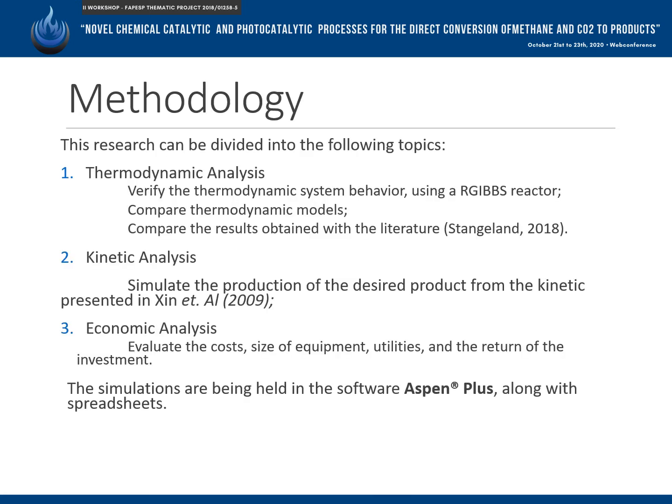This research can be divided into three topics. The first is the thermodynamic analysis, where the thermodynamic system behavior was verified by minimizing the Gibbs free energy. Two thermodynamic models were compared to verify their behavior and whether there is a great distinction in the results presented. Then the results were compared with values presented in the literature. Next, the kinetic analysis of the system was performed using equations presented in Shin and compared with simulated and empirical values.